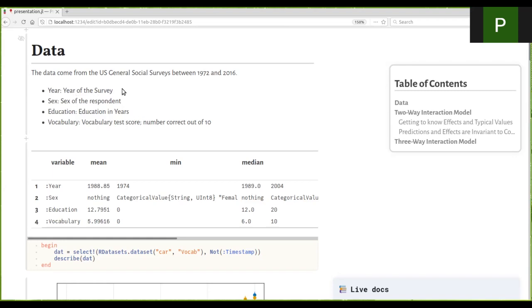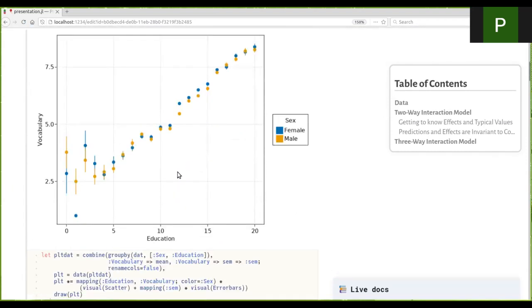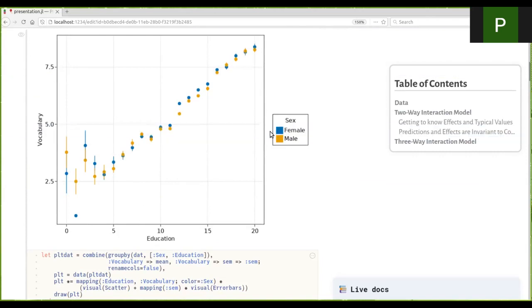There's four variables here: the year of the survey, the sex of the respondent (male or female), education in years, and the vocabulary test score, which is a number correct out of 10. Here's a simple plot of the data averaged across participants and across the different years the survey was taken, and you can see that vocabulary scores do indeed go up with increasing education as you'd expect.